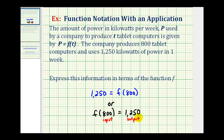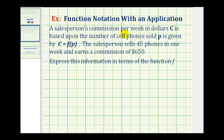Let's take a look at a second example. A salesperson's commission per week in dollars, C, is based upon the number of cell phones sold, P, as given by the equation C equals F of P. Notice that P, the number of cell phones, is the input into function F, and big C is the commission earned.